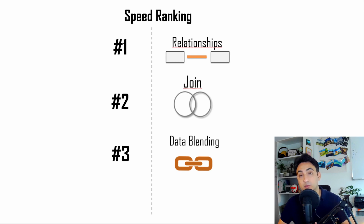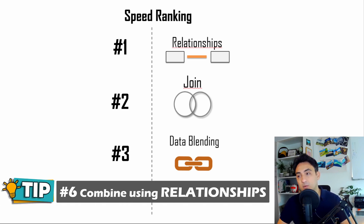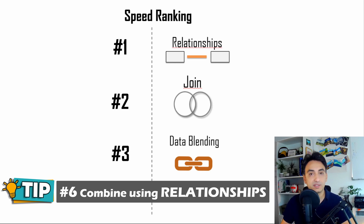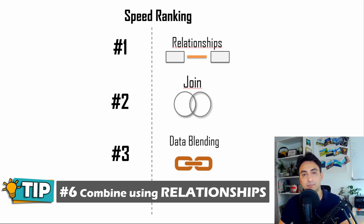If you want to combine multiple tables, you have three options: relationships, joins, and data blending. Here is how I rank them. Number one is relationships — Tableau will leave the tables separated and not merge them into one big table, keeping the data source small, and Tableau will generate queries only for data relevant to the analysis. Next is joining tables, which has worse performance because Tableau first combines all columns from two tables into one big table. Last is data blending, especially when blending two large data sources at the lowest level, such as using an ID for blending. My recommendation: go with relationships if you can.